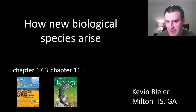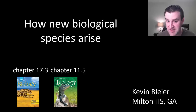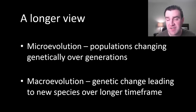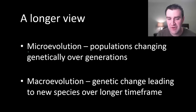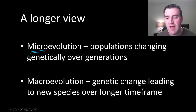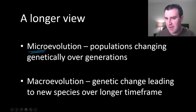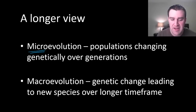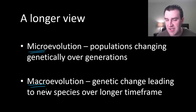In this video we're going to explore how different biological species might form due to evolutionary processes. In the first half of our evolution unit we talked about what is sometimes called microevolution, or evolution occurring on a smaller timescale. Maybe just over a few generations we might start to see the population's gene pool change, and now we're thinking about evolution on a larger timescale, or sometimes what's called macroevolution.